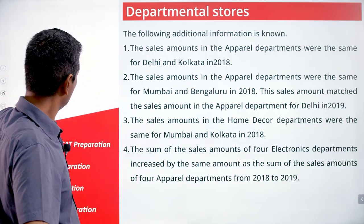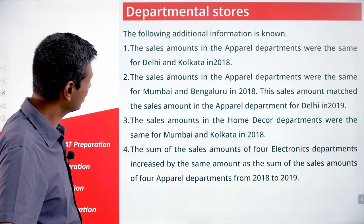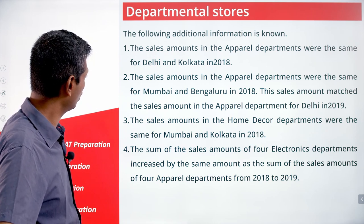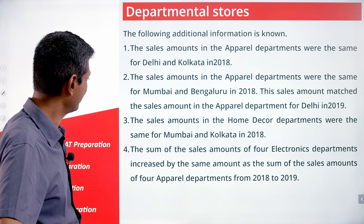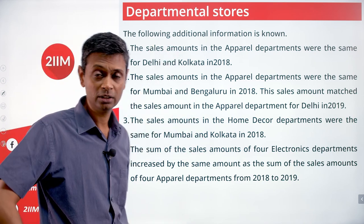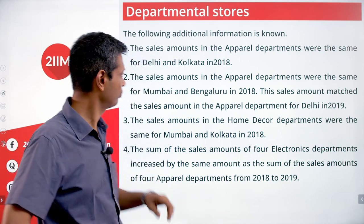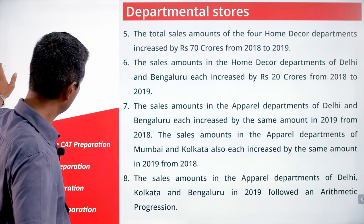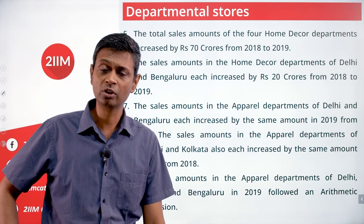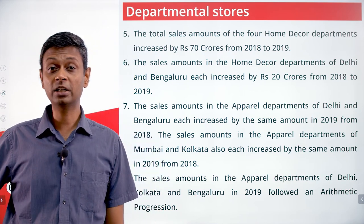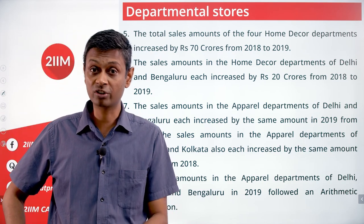Let's look at this. The following additional information is given: sales amounts in apparel were the same in Delhi and Kolkata; in apparel were the same for Mumbai and Bengaluru. I can't keep all of this in my head. I'm going to draw the table, go one by one and attack this. The more the constraints there are, the happier I am, because that tells me I'm likely to fill the entire grid and not have six variants.